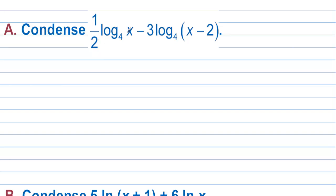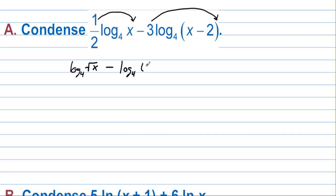Condense one-half log base 4 of x minus 3 log base 4 of (x − 2). First, bring the coefficients back up as powers: log base 4 of x^(1/2) minus log base 4 of (x − 2)³. That's the square root of x. Then, since there's a minus between the logs, we combine them using division: log base 4 of (√x over (x − 2)³).